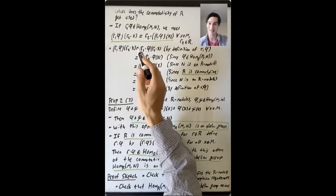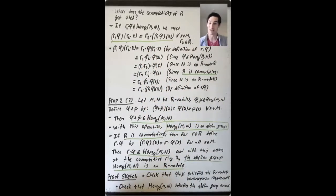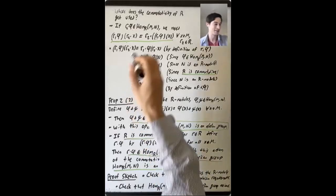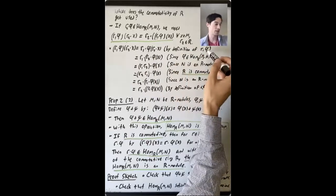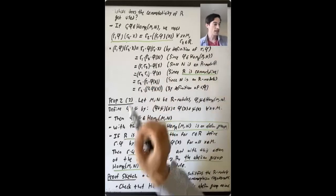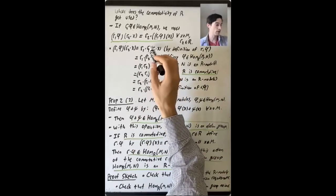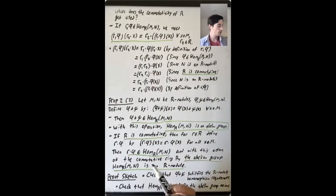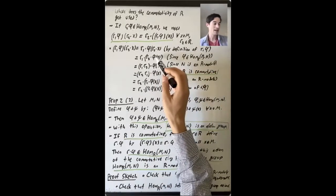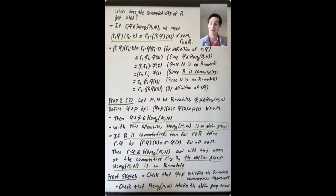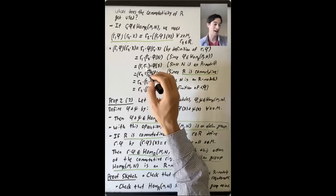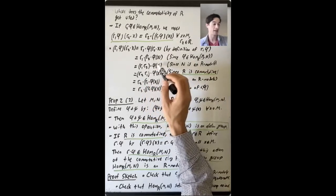Let's check in detail why this is true when R is commutative. What is R1·phi applied to R2·x? By definition of R1·phi, it's R1 dot phi applied to that input, so it's R1·phi(R2·x). Now phi is an R-module homomorphism, so phi(R2·x) = R2·phi(x). Then phi(x) is some element of the R-module N. Since N is an R-module, R1·(R2·phi(x)) = (R1·R2)·phi(x), where the product R1·R2 happens in the ring R.